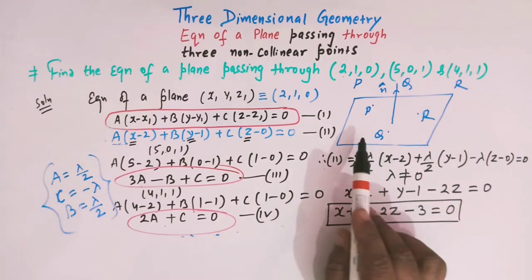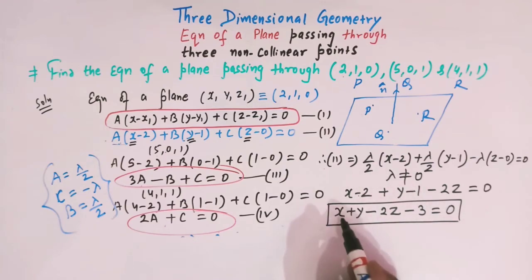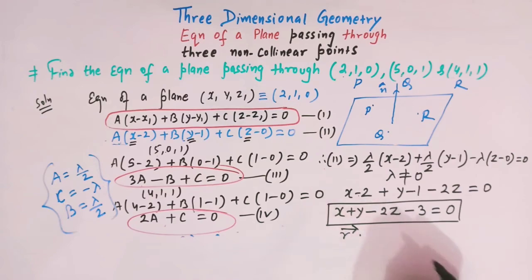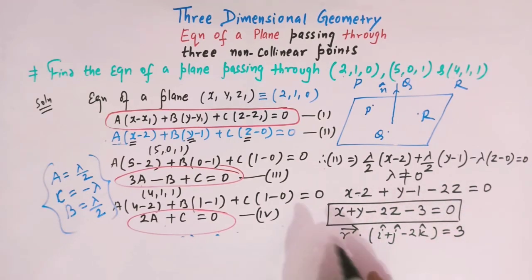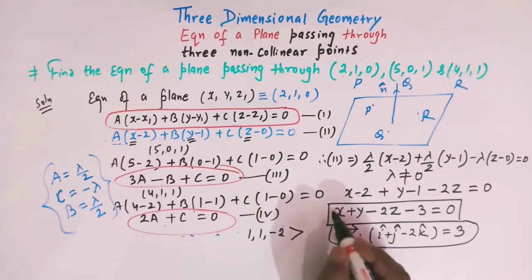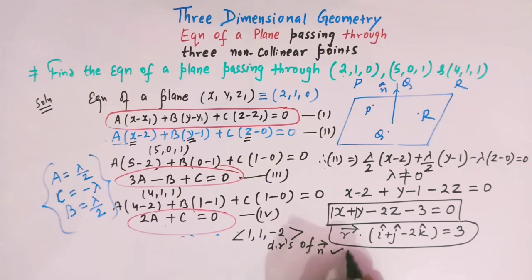The equation of the plane passing through these three non-collinear points is x + y − 2z − 3 = 0. In vector form, this is written as r⃗ · (î + ĵ − 2k̂) = 3. The coefficients of x, y, z — that is 1, 1, and −2 — are the direction ratios of the normal vector to the plane. This is how we solve this important and conceptual problem.